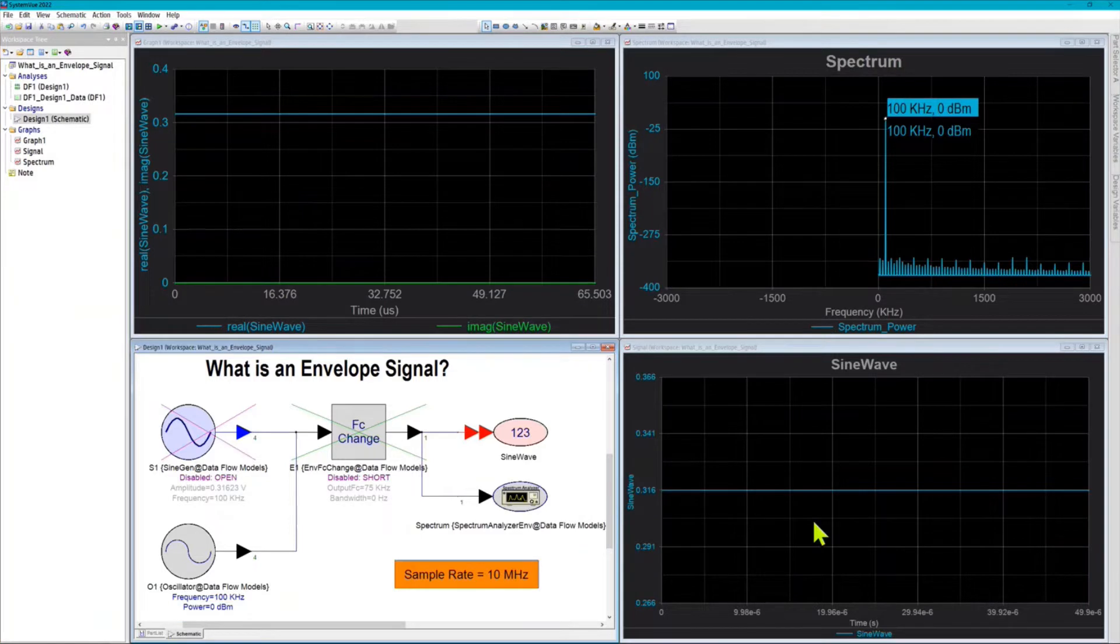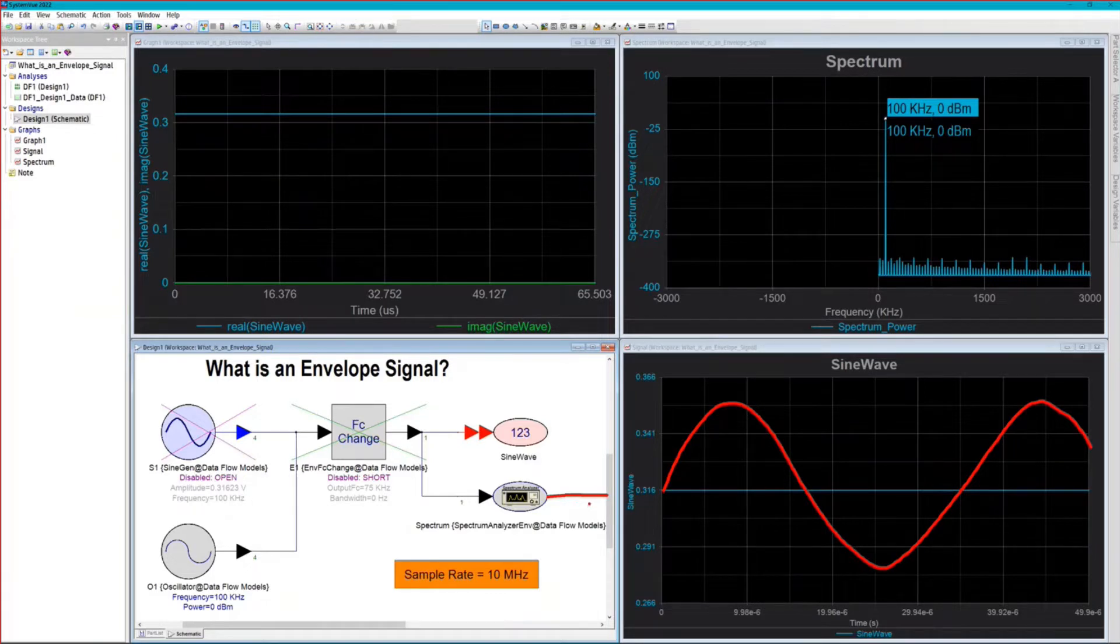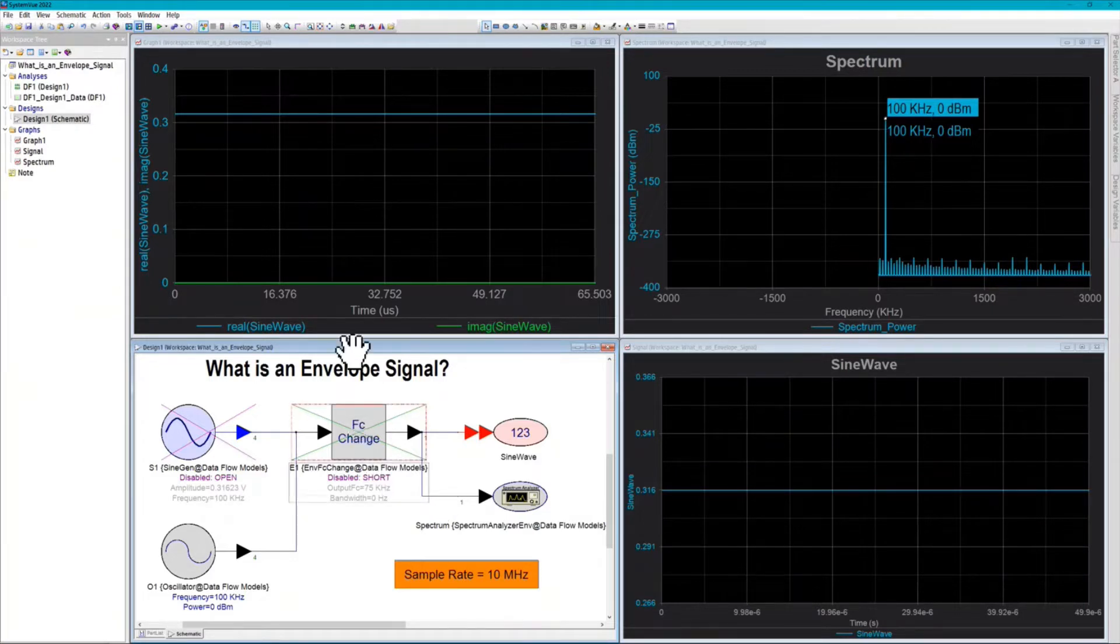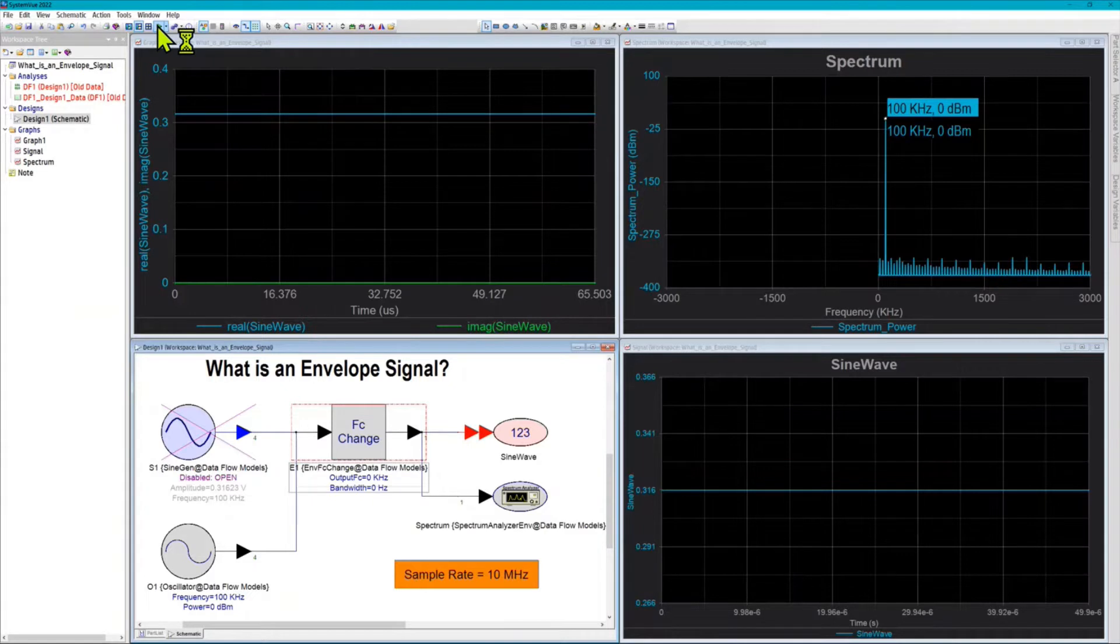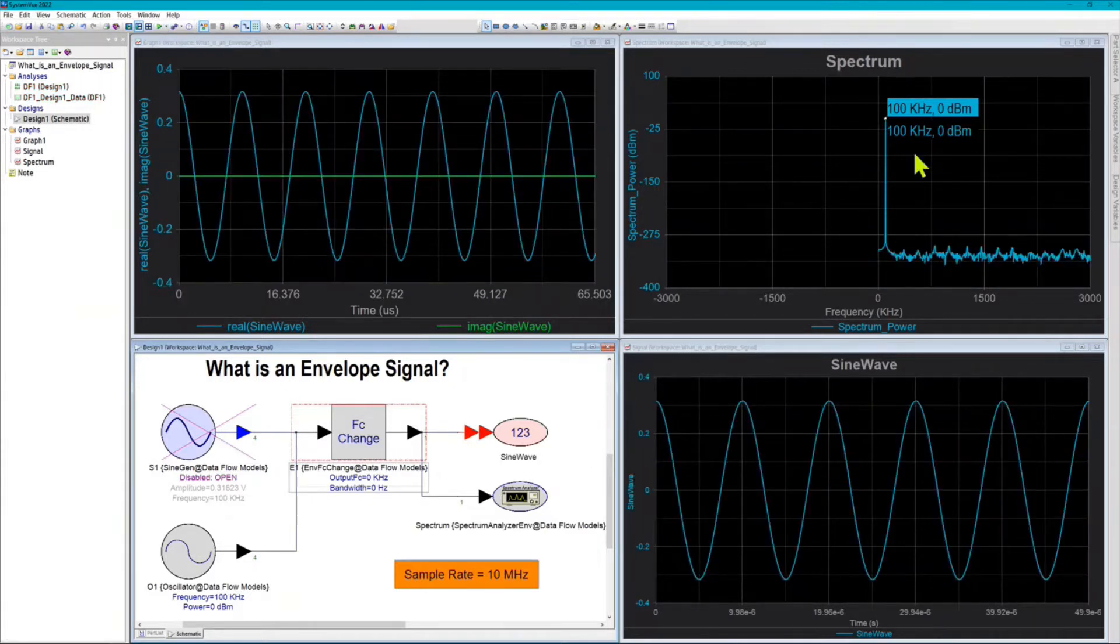How do we see the sine wave here? This is going to be important to certain people that want a sine wave that they can perhaps apply to an A to D converter later on down the chain or for some other reason. Basically, what we have to do is change the characterization frequency of the envelope signal. We do that with an FC change component. If I set this to zero hertz and rerun the simulation, I retain the spectrum as before, and I regain the sine wave on the graph.